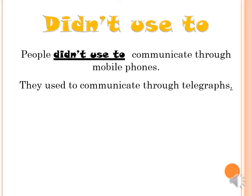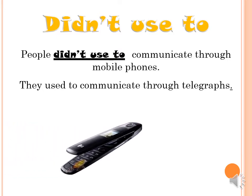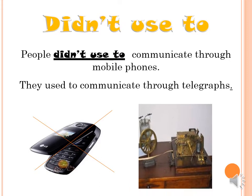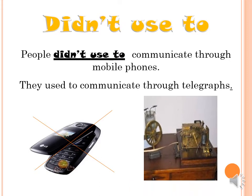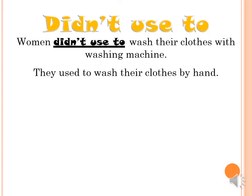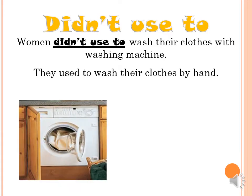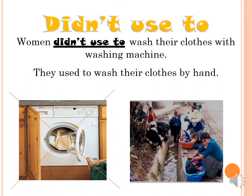Didn't used to. People didn't used to communicate through mobile phones — they used to communicate through telegraphs. Women didn't used to wash their clothes with a washing machine; they used to wash their clothes by hand. That means this action happened in the past — this was their habit in the past.